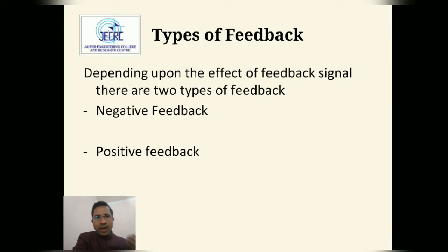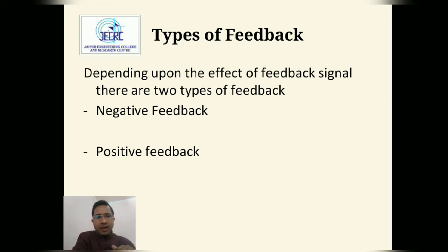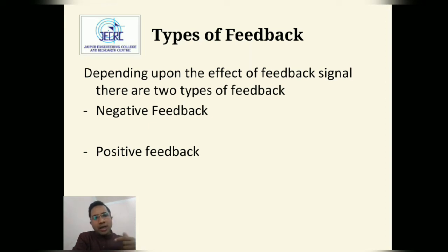Types of feedback: Feedback is a process in which we combine output energy with input via a feedback network. There are two types of feedback — negative feedback and positive feedback. In negative feedback, the feedback signal decreases the net input, or we can say it is 180 degrees out of phase with the input signal. In positive feedback, the feedback signal is in phase with the input signal.